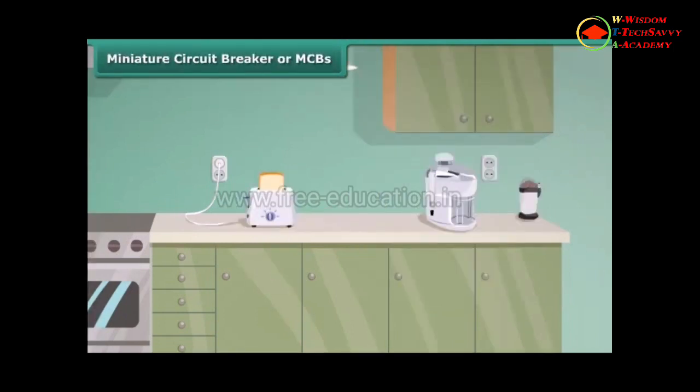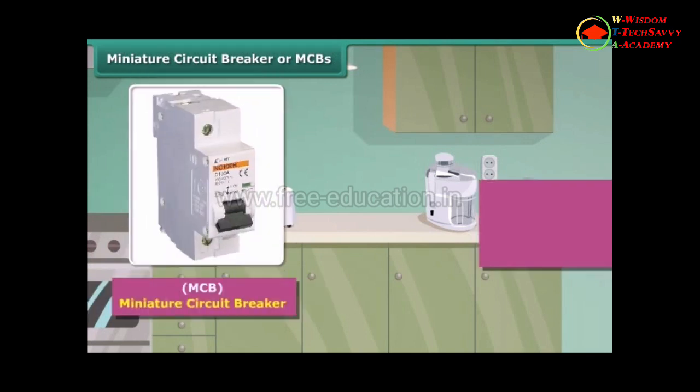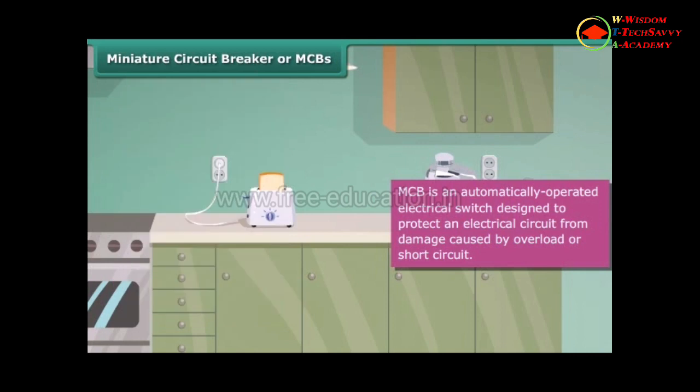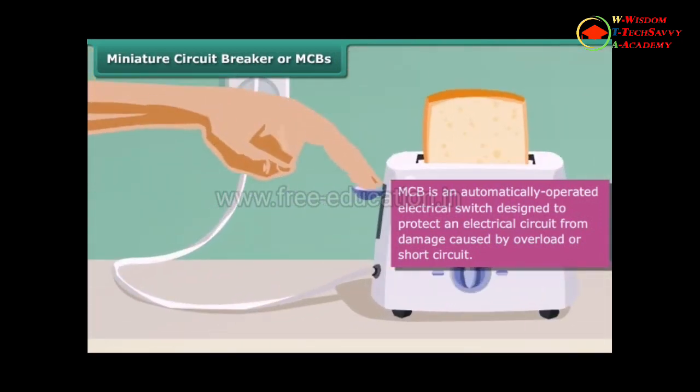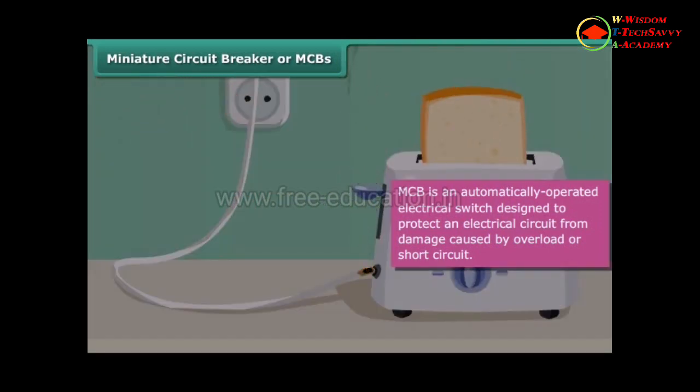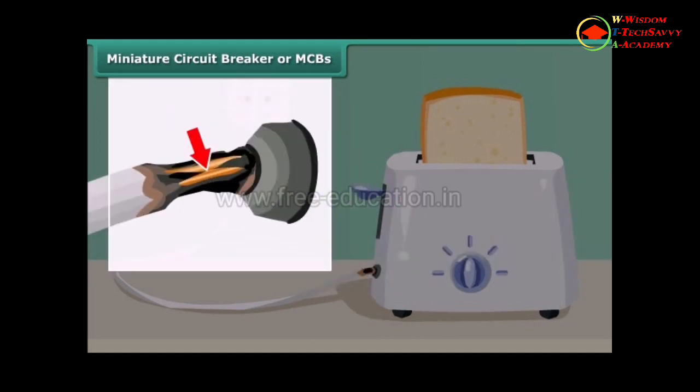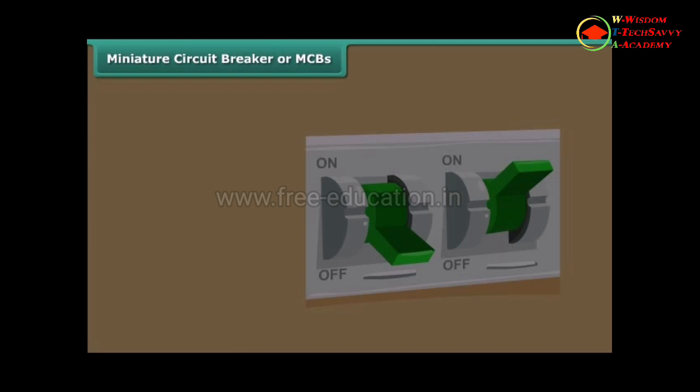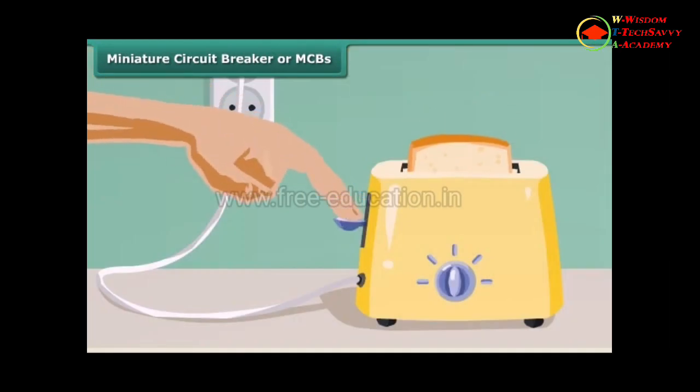Miniature circuit breaker or MCB. Miniature circuit breaker or MCB is an automatically operated electrical switch designed to protect an electrical circuit from damage caused by overload or short circuit. Whenever there is a fault in a circuit, MCB interrupts continuity to discontinue electrical flow immediately. It can be reset to resume normal operation.